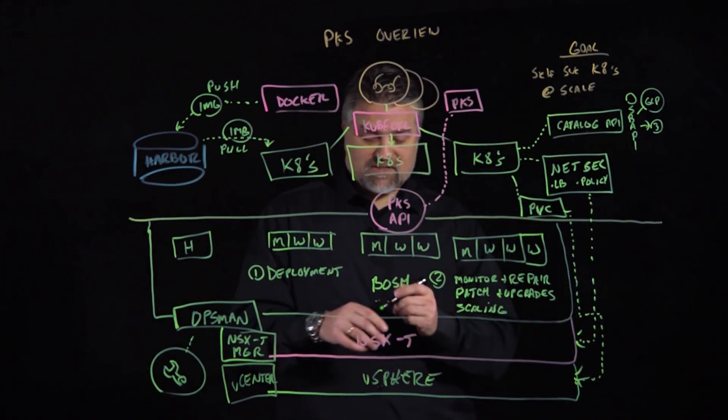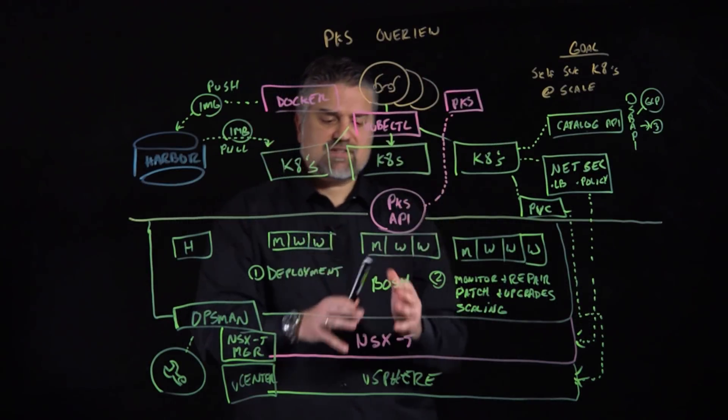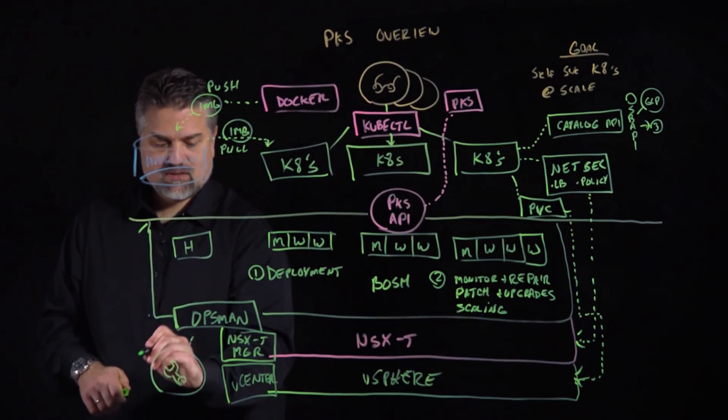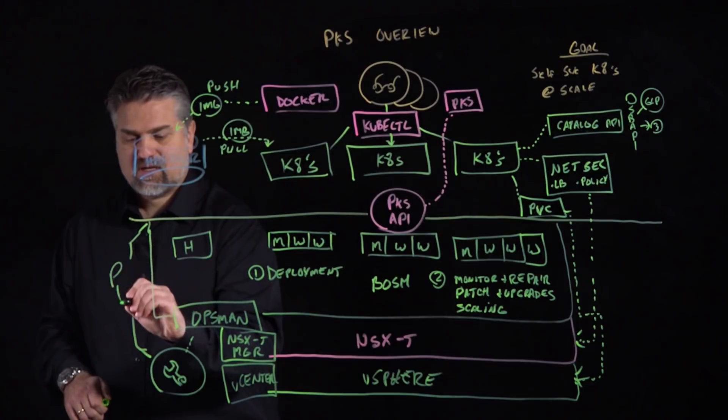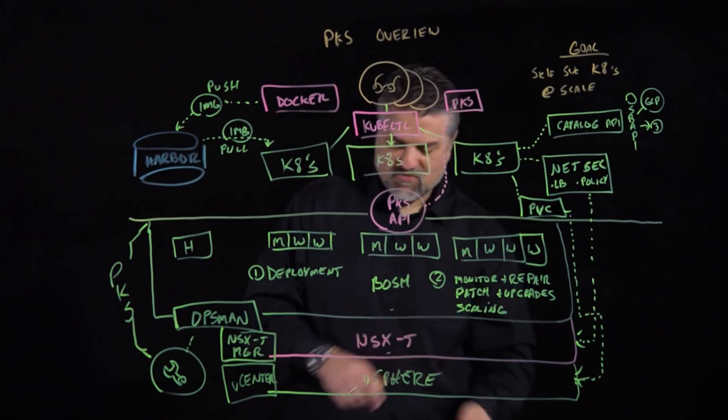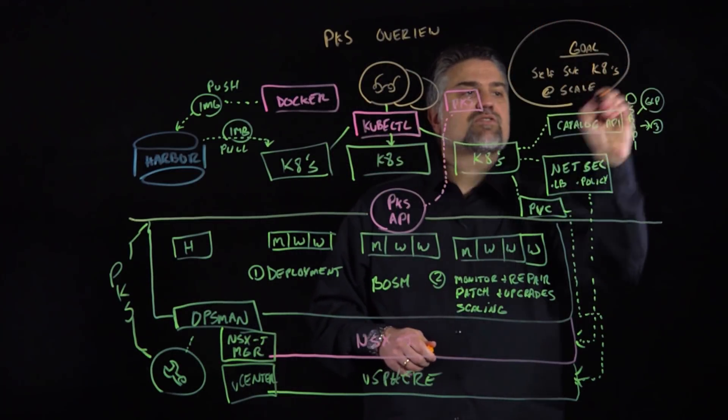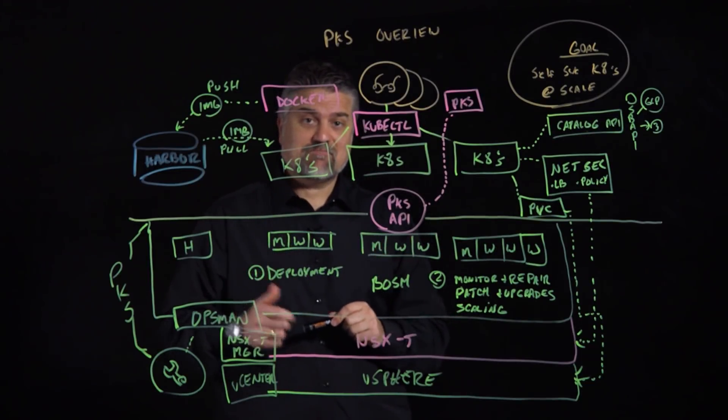So we put all these things together and this is PKS. So when we look at this component of the PKS API and Bosh and NSX-T, these components, these key components make PKS. And what PKS does is, as I mentioned before, our main goal with PKS is that we can offer self-service Kubernetes at scale in production for your enterprise. Thank you.